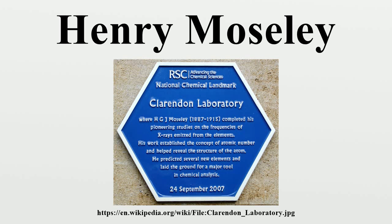He declined a fellowship offered by Rutherford, preferring to move back to Oxford in November 1913, where he was given laboratory facilities but no support. Experimenting with the energy of beta particles in 1912, Moseley showed that high potentials were attainable from a radioactive source of radium, thereby inventing the first atomic battery, though he was unable to produce the 1 MeV necessary to stop the particles.